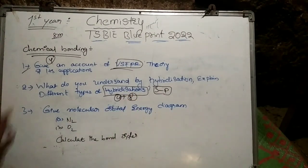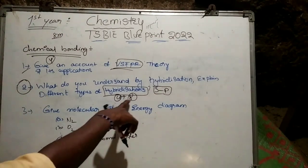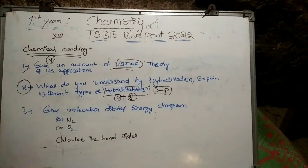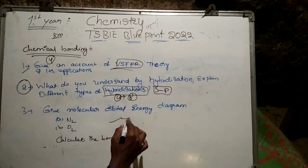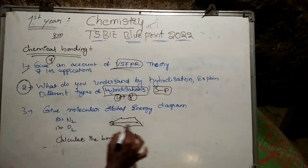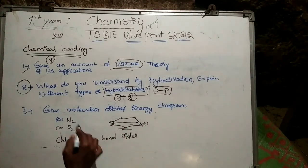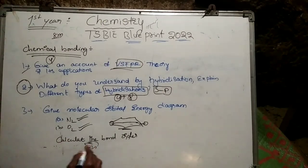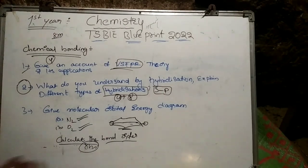This hybridization question is compulsory — if you attempt it, you can score 8 marks. The third question is: give the molecular orbital energy diagram. The energy level diagrams for nitrogen and oxygen are in the textbook and materials. If you draw the energy diagram and calculate the bond order, the total is 8 marks.